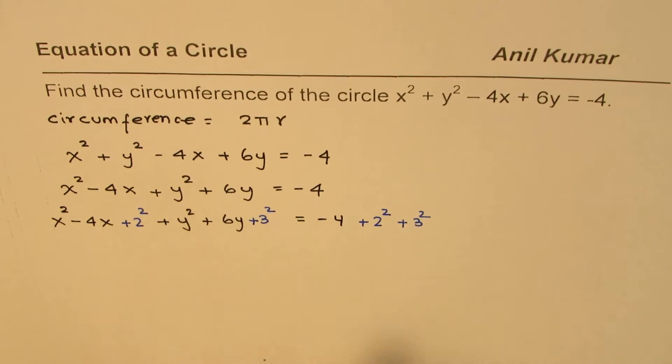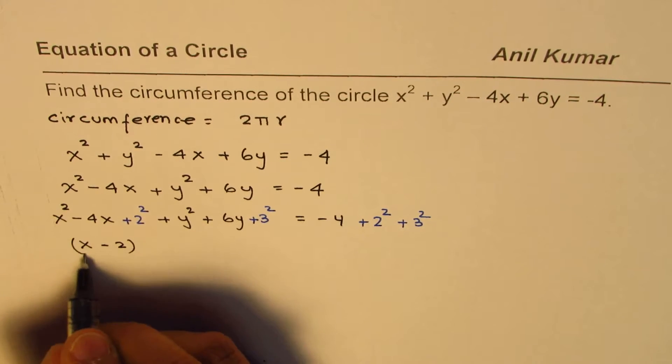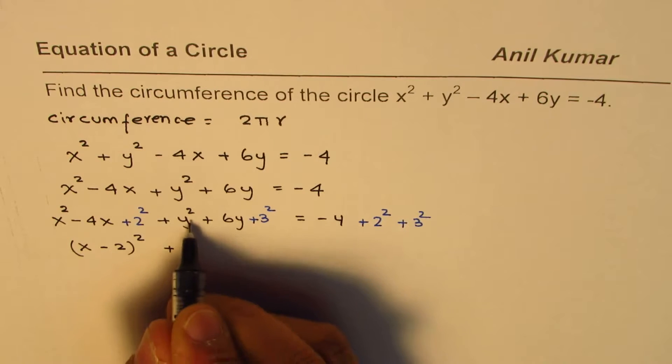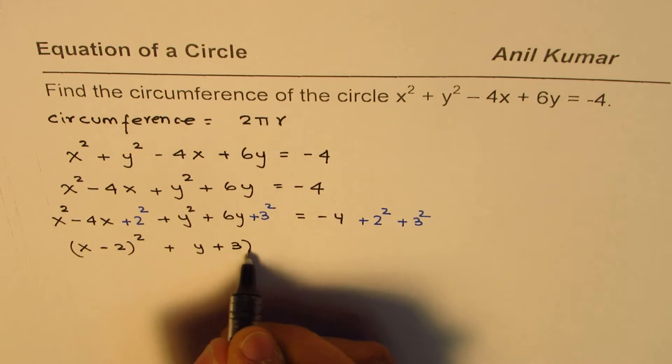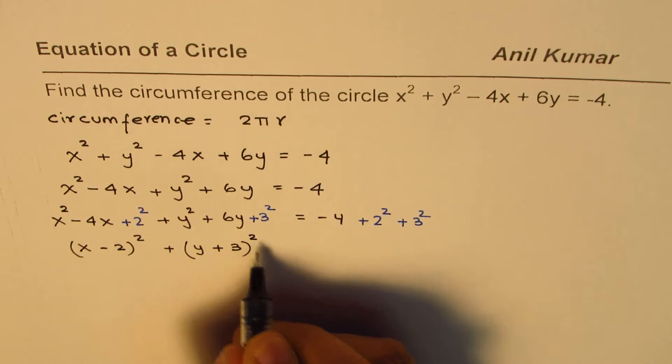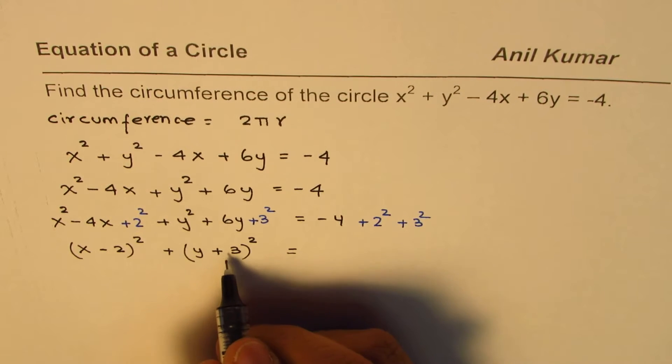Now by doing so, what really happens is these three terms can be combined and written as x minus 2 whole square plus these three terms will be y plus 3 whole square. So that's the completing squares method. I'll provide you a link which can help you understand this if you need to practice similar questions.